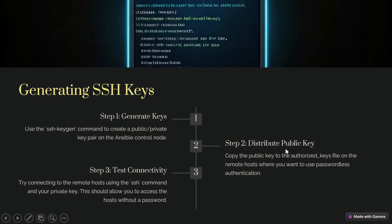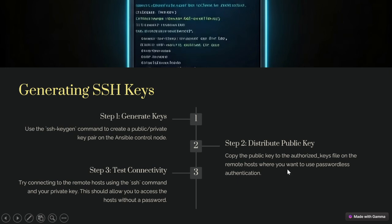The second step is to distribute the public key. Copy the public key to the authorized keys file on the remote host where you want to use passwordless authentication. We can copy the public key to the authorized keys file, which is stored at /etc/ansible/authorized_keys. We can modify it and copy the public key there so we can authenticate without a password.